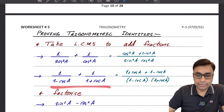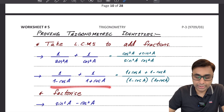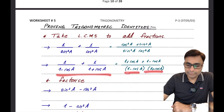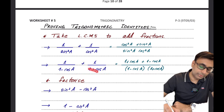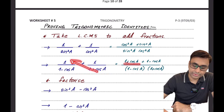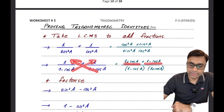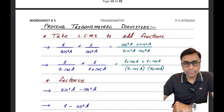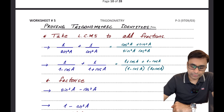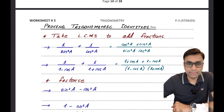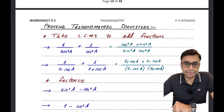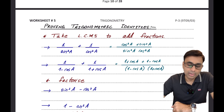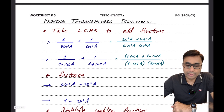Similarly if I have a set of fractions that needs to be simplified I will still take an LCM. I'll say (1 - cos a)(1 + cos a) is going to be the LCM, then multiply (1 + cos a) by 1 to get the first term and (1 - cos a) by 1 to get the second term. If you ever see fractions which can be simplified or added, go for that.